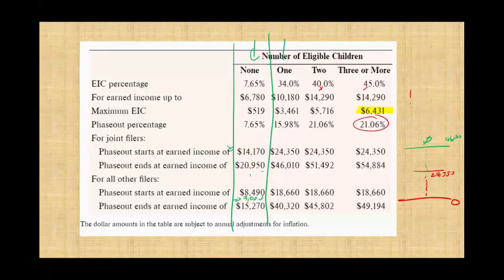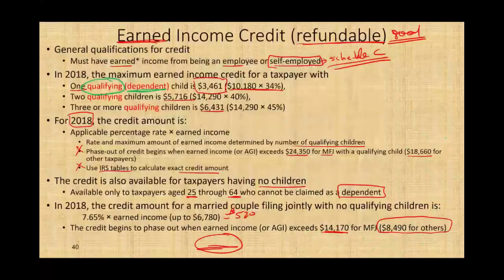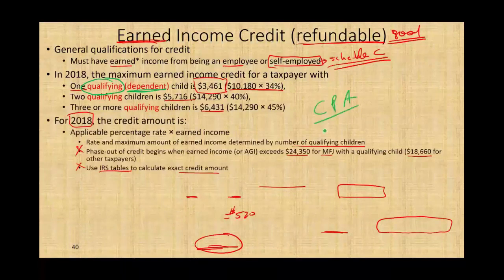Keep in mind those numbers are subject to inflation, so from year to year they will change. But the concept stays the same — the qualification rules and what constitutes a qualifying child may shift slightly. Make sure you read your textbook for that particular year. If you have any questions about this topic, please email me. If you happen to be studying for your CPA exam or for your college studies and you visit my website for additional lectures, please consider donating.